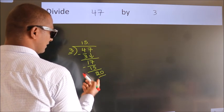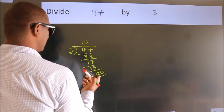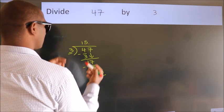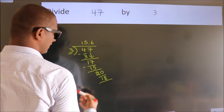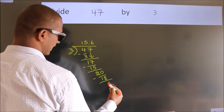So 20. A number close to 20 in the 3 table is 3 sixes 18. Now we subtract. We get 2.